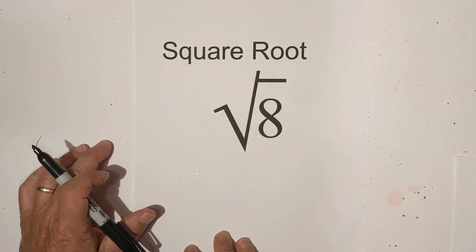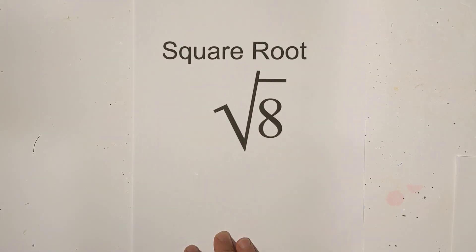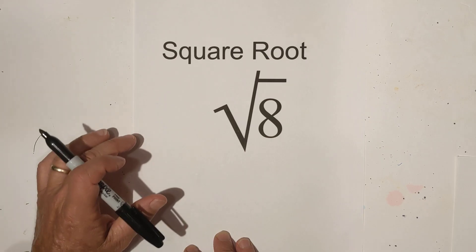One, I'm going to show you how to simplify it. Two, I'm going to show you how to estimate pretty easily what the square root of 8 is. And then I'll show you what the value is, which is an irrational number.